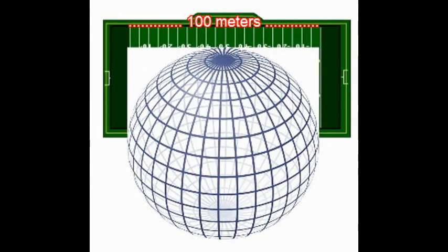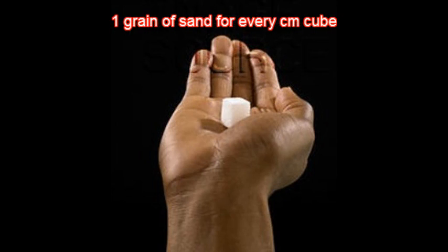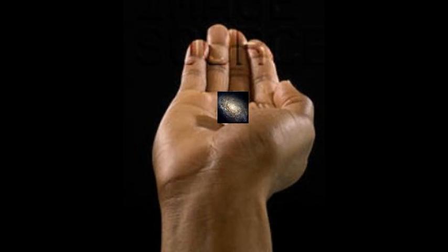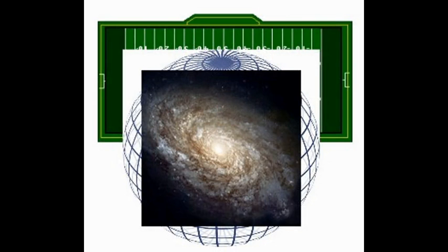To visualize the vastness of the universe, an imaginary 100 meter diameter sphere over the sports field can be used. A grain of sand every cubic centimeter would make half a trillion or 500 billion grains of sand in our imaginary sphere. If the universe was the sphere, then each grain of sand would represent a galaxy.